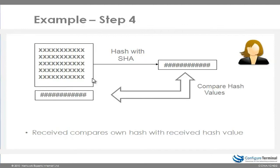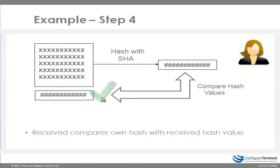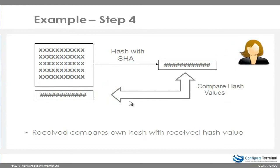Sarah, upon receipt of the data, wants to make sure the data hasn't been tampered with before going through the effort of decrypting the text. Sarah will take the encrypted text and hash it herself to come up with an MD5 or SHA hash. She will then compare the hash she derived with the hash appended to the encrypted data. Only if the hashes are the same does she bother decrypting the text. If the hashes are the same, it means the data hasn't changed in transit, and Sarah can decrypt the data by reversing the AES encryption.